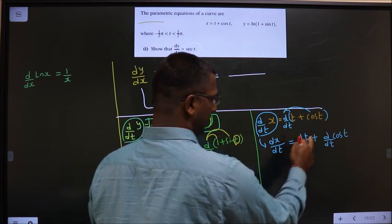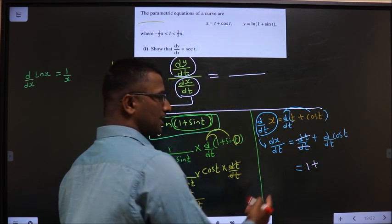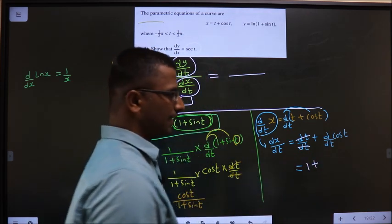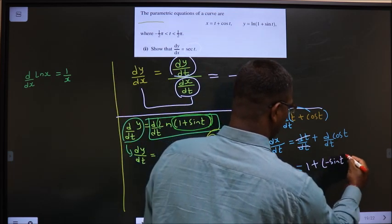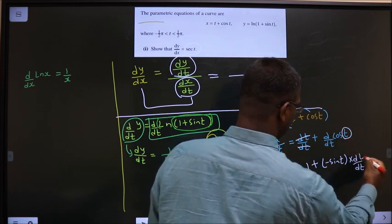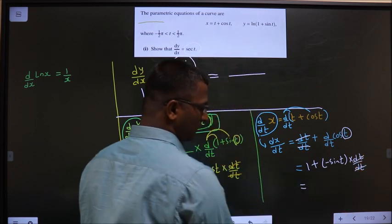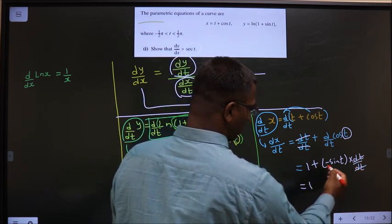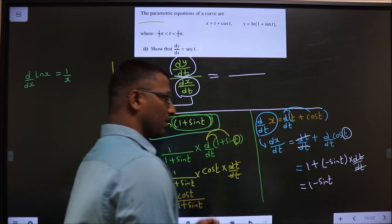Now dt dt gets cancelled. You are left with 1. And what is differentiation of cos t? Is minus sin t. And don't forget the good practice. d by dt of in place of x whatever is present. Anyhow this gets cancelled. Now you get 1 plus into minus is minus sin t. Clear.